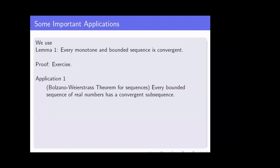The first application is the Bolzano-Weierstrass theorem for sequences: every bounded sequence of real numbers has a convergent subsequence. Given a sequence of real numbers, by our main theorem there exists a monotone subsequence, call it xnk. The extra condition here is that the sequence is bounded. Since the sequence is bounded, every subsequence of it is also bounded. We now have a monotone and bounded subsequence, so by Lemma 1 that subsequence converges. Hence every bounded sequence of real numbers has a convergent subsequence.